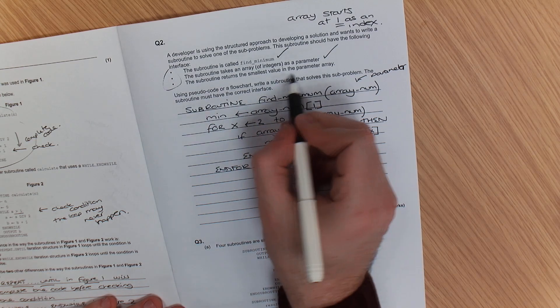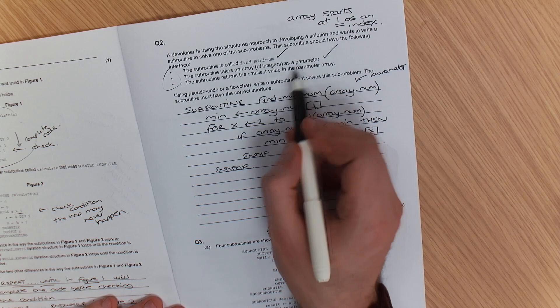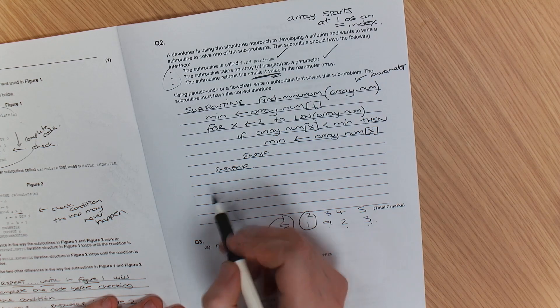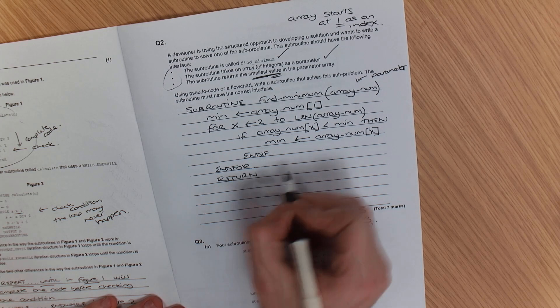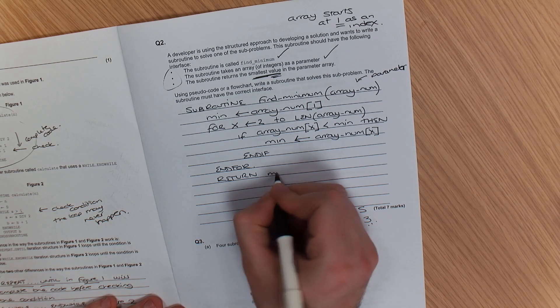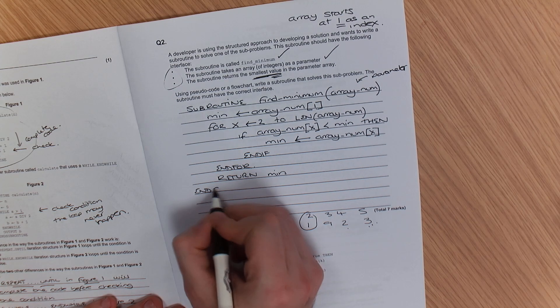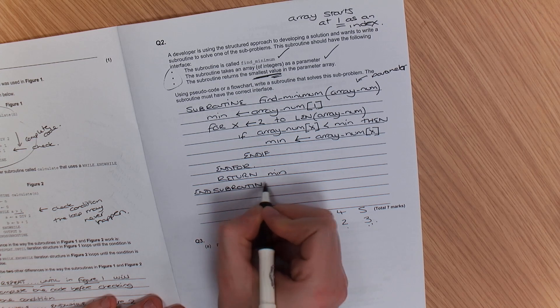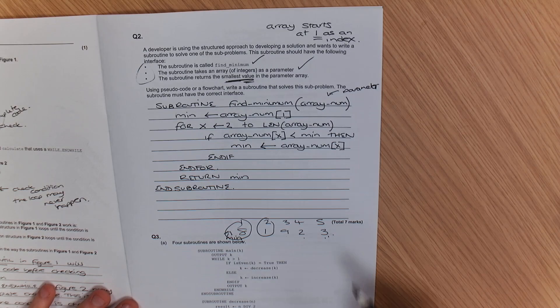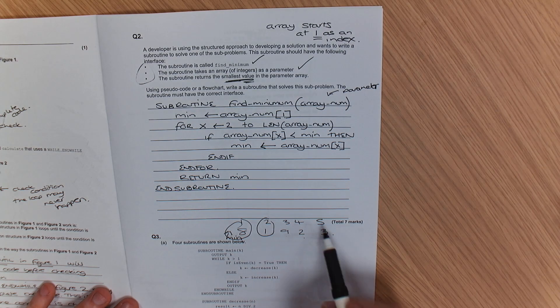Then it says here, return the small. So I've gone through every item in the list, and I'm returning the smallest value, which is min. So it is return min. And I'm going to end my subroutine to finish that off. So you can see there the value of x. In this case, if it was one, one, two, three, four, five.